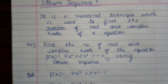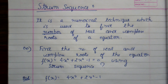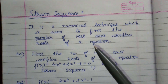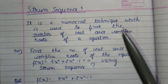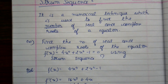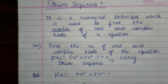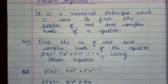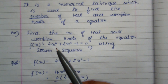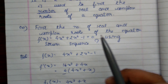The topic we are going to discuss is Sturm sequence. It is a numerical technique used to find the number of real and complex roots of an equation. It does not tell us what the roots are, but tells us the number of roots the equation has. The question is to find the number of real and complex roots of f(x) = 4x^4 + 2x^2 - 1 = 0 using Sturm sequence.